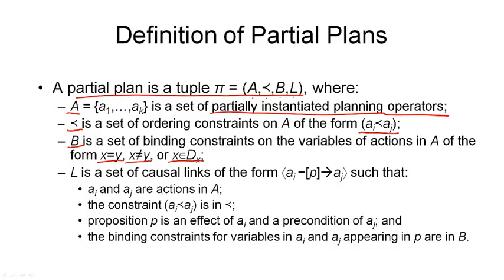Then the fourth component are the causal links that are part of this plan. And they are of this syntactic form here. They connect actions AI and action AJ through this proposition P. And here's what this all means. So AI and AJ must be actions in our current partial plan. Also the action AI, the first component, must come before the second component. So we must have an ordering relation in our ordering constraints of this type. AI before AJ.